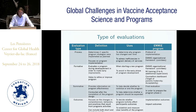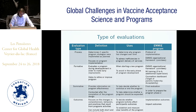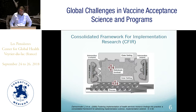Summative evaluation provides information on program effectiveness, conducted after completion of the program design, and helps you decide whether to continue or end the program. Finally, outcome evaluation should be focused on changes in comprehension, behaviors, and practices resulting from program activity, and is used to decide whether the program affects participatory outcomes and to establish measurable, clear benefits of the program.